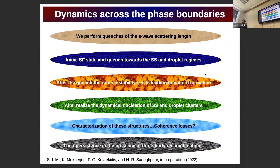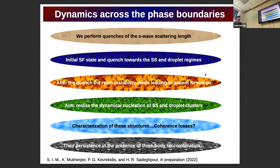Having discussed the ground state properties of the system, I will now move towards the dynamics. I will initialize the system in a superfluid state and then perform a quench of the S-wave interaction in order to cross the phase boundaries towards the supersolid or the droplet region. My aim is to characterize these structures in terms of their coherence losses, and also afterwards to include three-body recombination processes and see their impact.